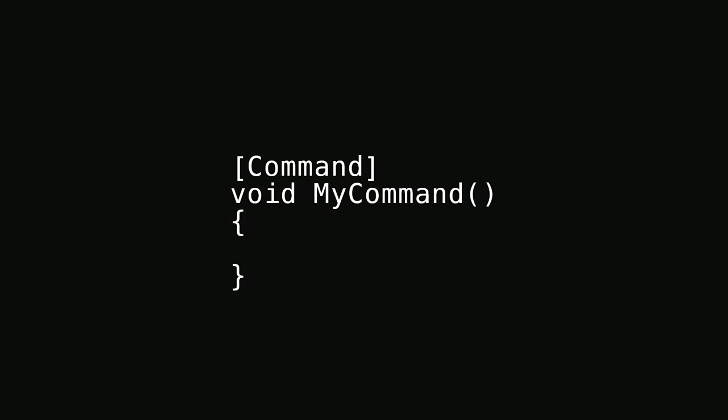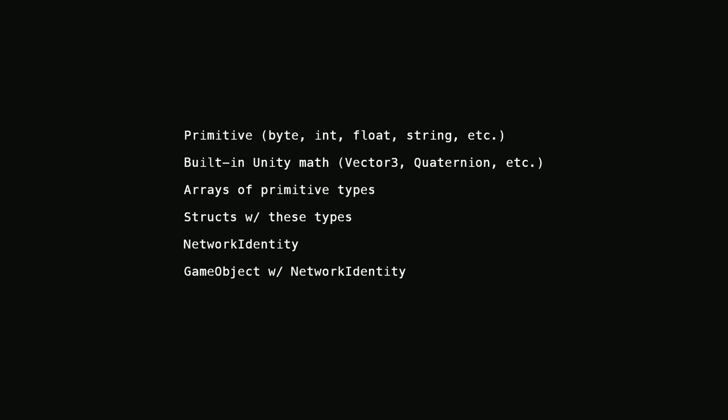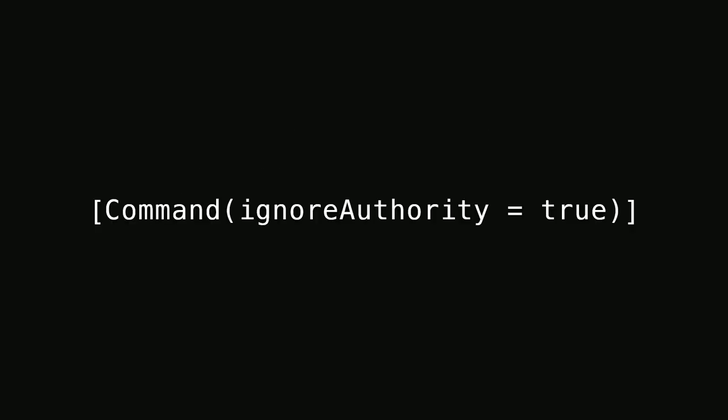There are some restrictions on parameter types for commands: primitive types like bytes, ints, floats, and strings; built-in Unity math types like Vector3 and Quaternion; arrays of basic primitive types; structs containing these allowable types; and NetworkIdentities and GameObjects with NetworkIdentities. It is possible to invoke commands on non-player objects if the object has client authority or if we set the ignoreAuthority option to true in the command attribute — in which case commands run on the server instance of the object, not the player object.